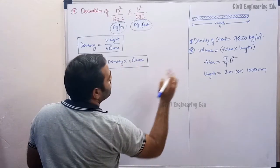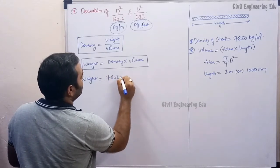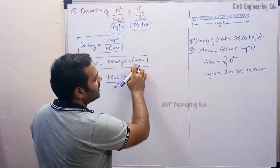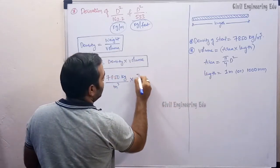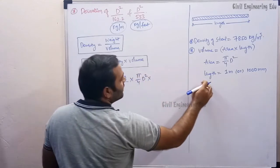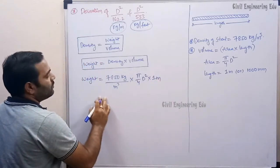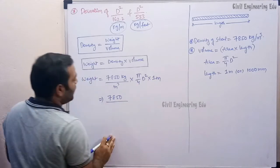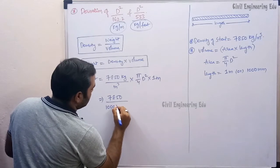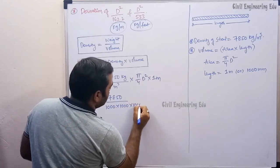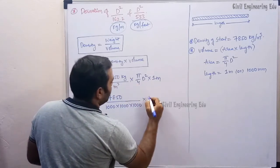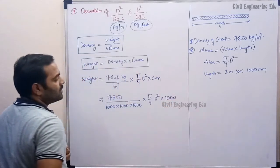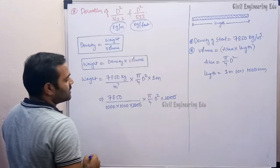Now substituting: weight is equal to density — 7850 kg per meter cube — multiplied by volume, which is area × length, i.e., π/4 × D² × 1 meter. To convert meters to millimeters, I divide 7850 by 1000 × 1000 × 1000, giving 0.007850, and multiply by π/4 × D².